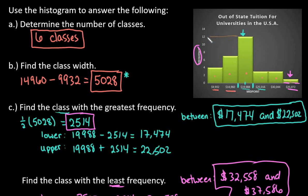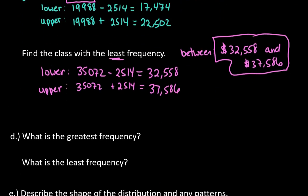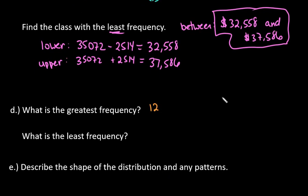We already know the highest is the 19,988. Then we would just come across to our number over here. We can see that it's 12, that there are a total of 12 that fall in this. So our greatest frequency is 12. We have 12 that fell in that class.